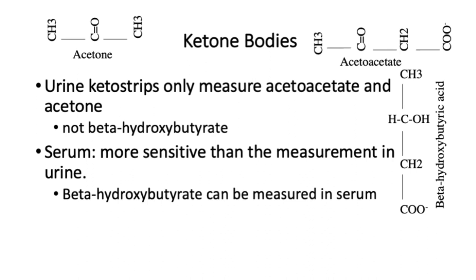Using keto strips at the beginning as a diagnostic test will help you diagnose the presence of ketoacidosis. As you get greater oxidation of these products to beta-hydroxybutyrate, the keto strips may suggest things are getting worse when, in fact, they're getting better. So using keto strips to measure acetoacetate and acetone diagnostically at the start, then basically ignoring the urine ketone body measurements during treatment, is a pretty typical approach.